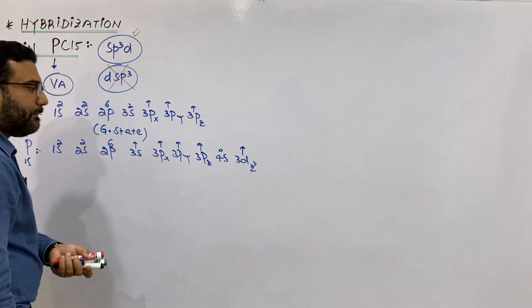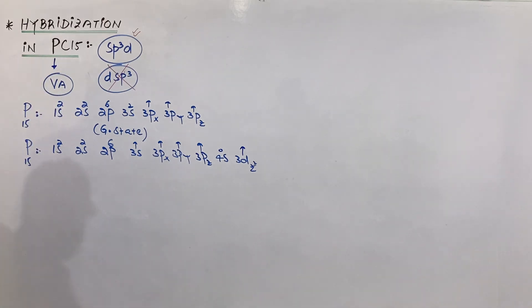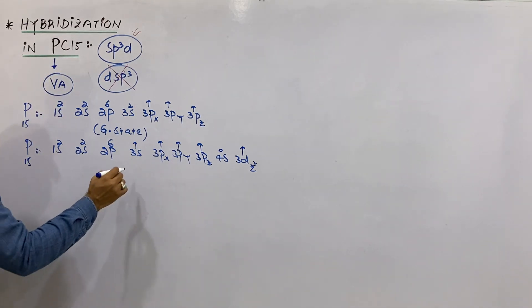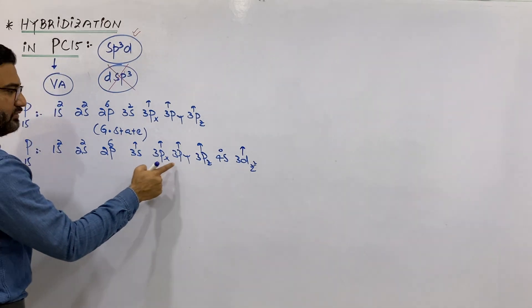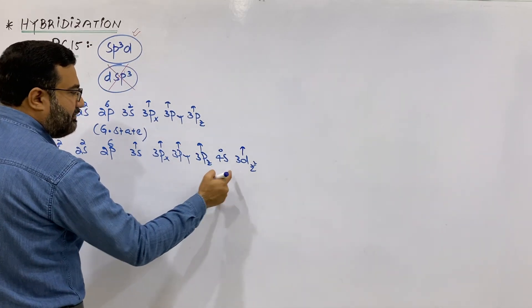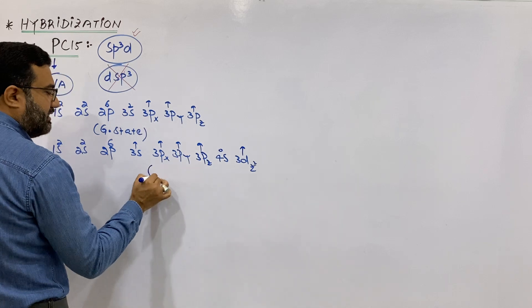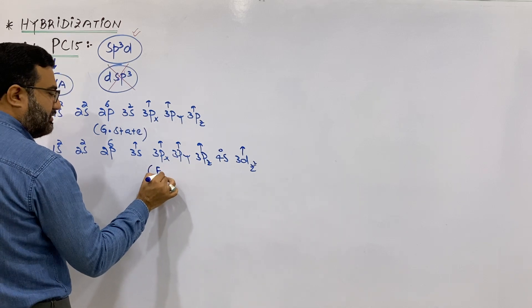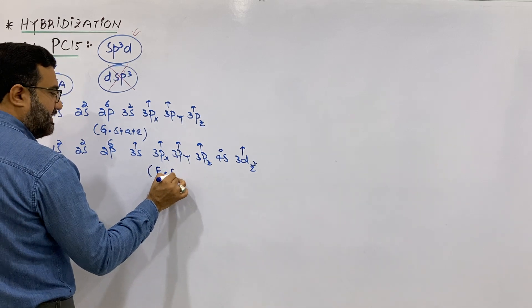The 3d orbital will remain empty after the transition. Now in this excited state configuration, there are 1, 2, 3, 4, 5 — it has 5 unpaired electrons. So it will show pentavalency, and that is the excited state electronic configuration of phosphorus.